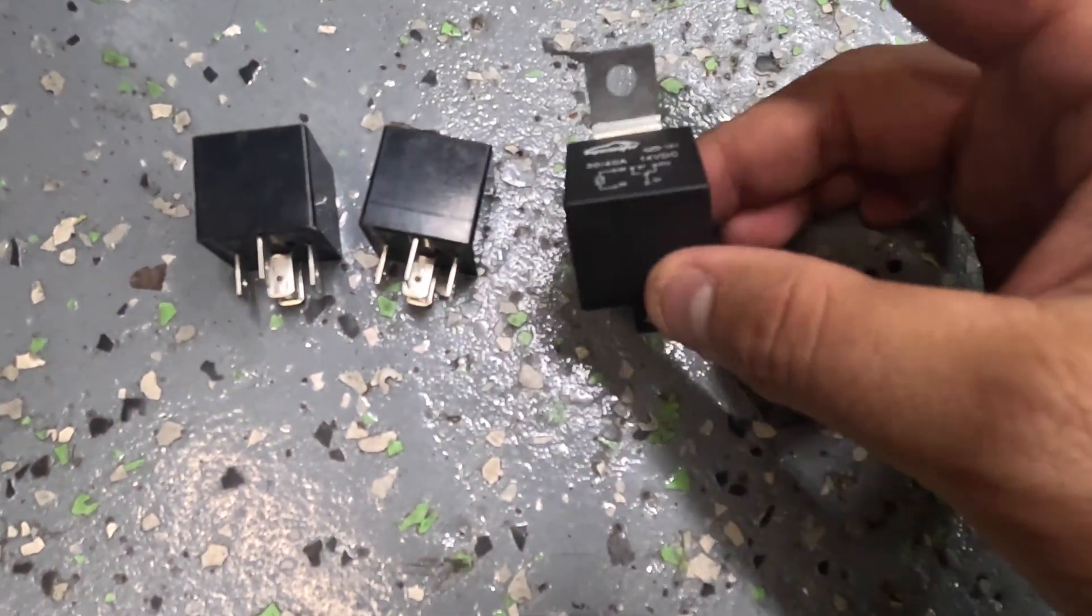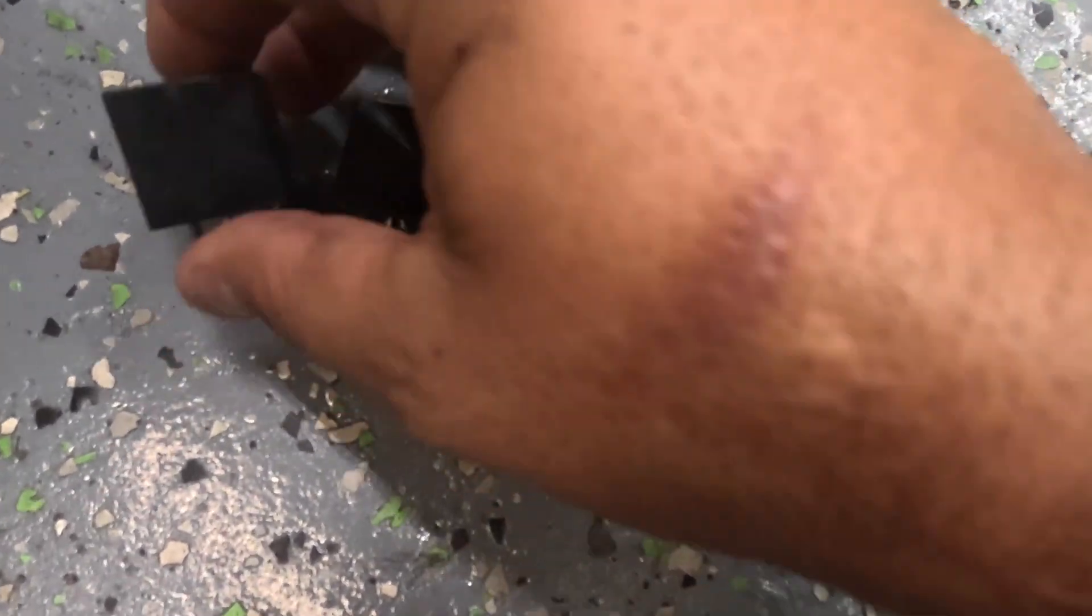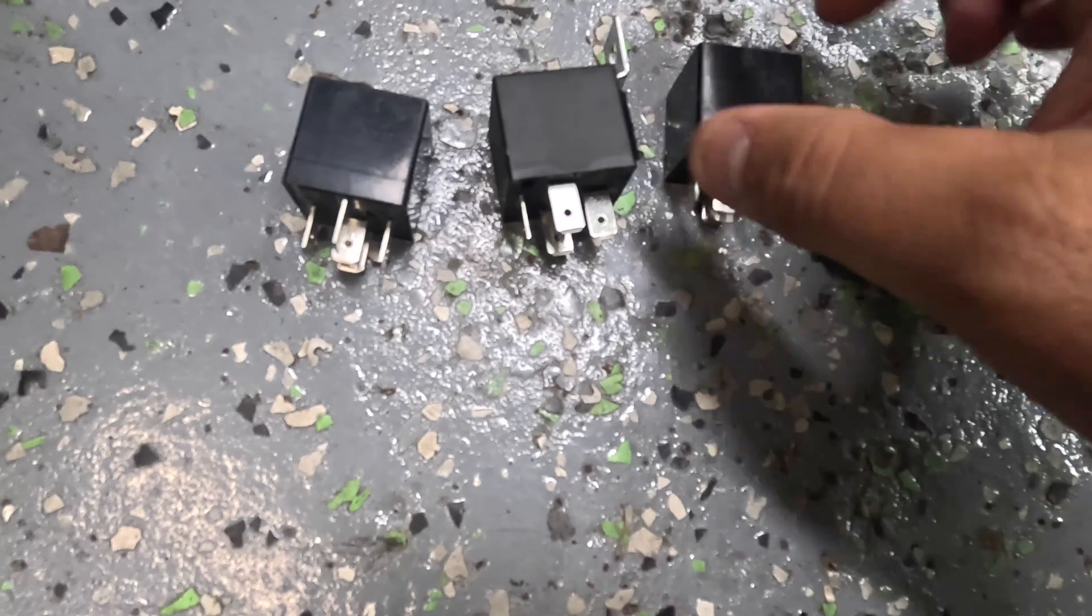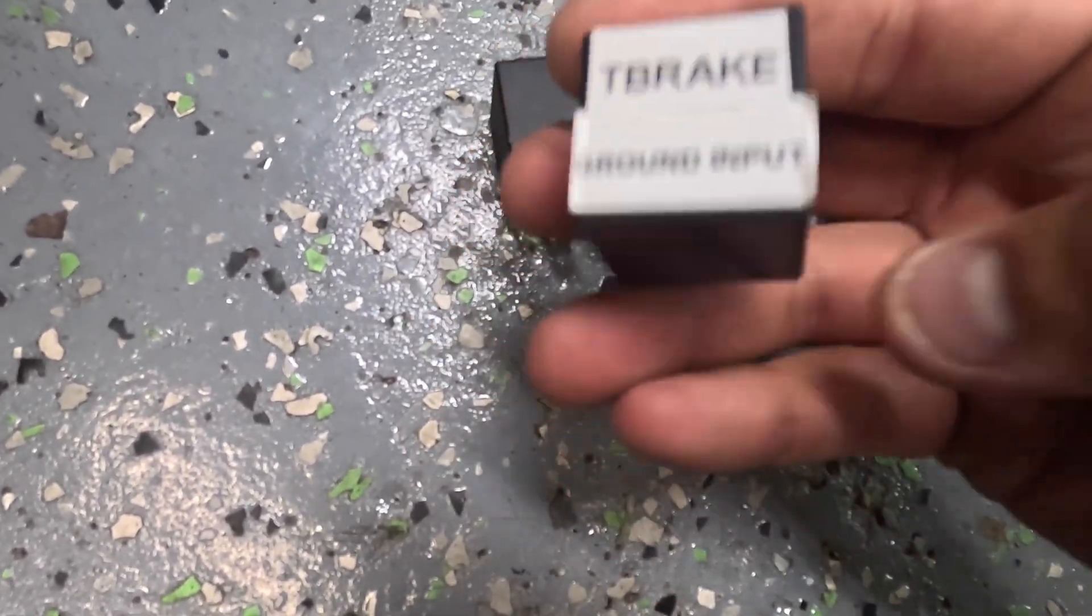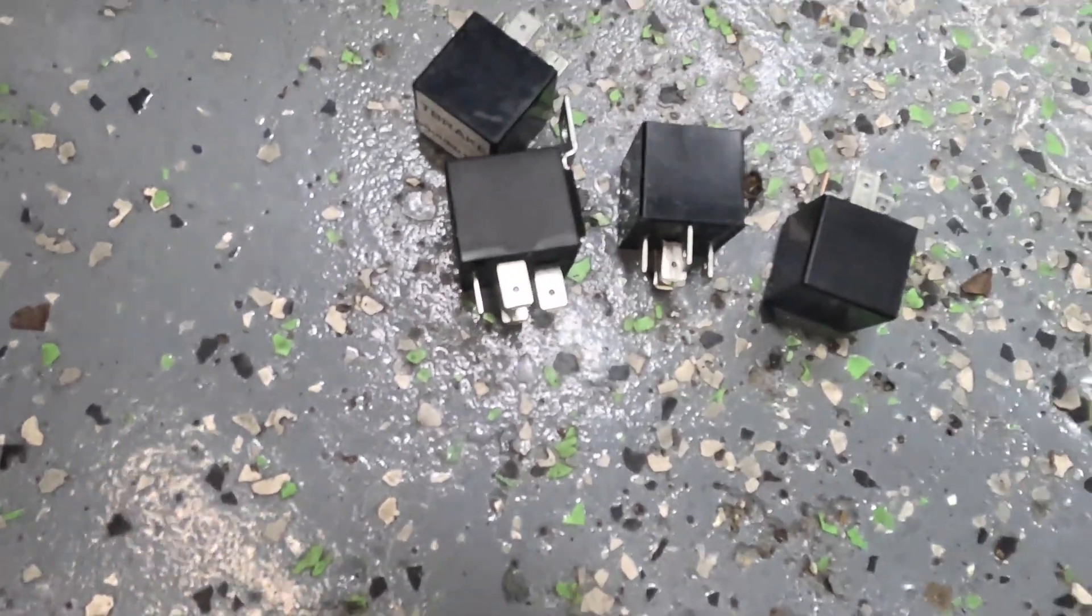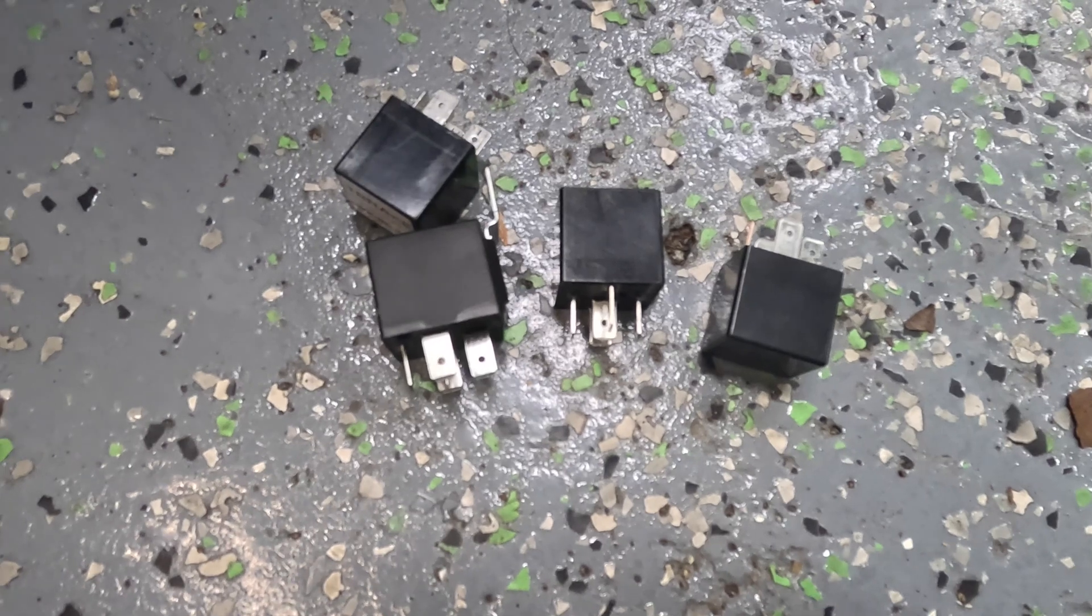You can see I have a couple different ones here. They all come in different shapes and sizes. Some have mounts, some are a little bit skinnier than others. Some of the cheaper ones may have fuses built in. This is an old one that I was using for trans brake with a ground input. But I highly recommend labeling your relays if you're building your own wiring. Let's jump right into it.